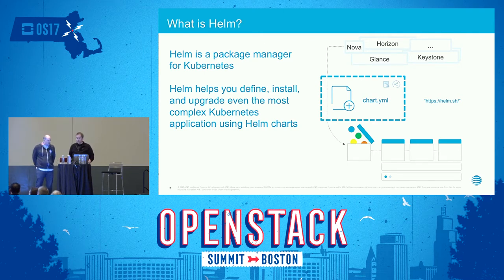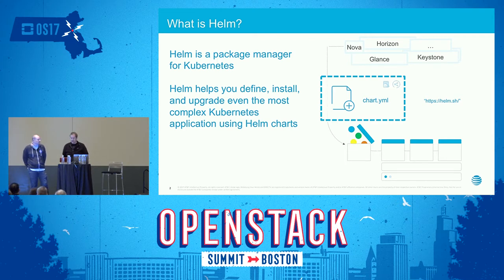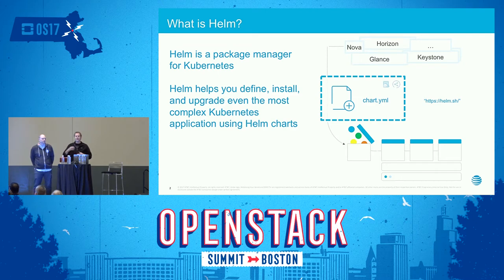A chart might also deploy something complex like a full stack with servers, databases, caches, and other things. Helm has an understanding of inter-chart dependencies. Importantly, it allows us to templatize our experience with Kubernetes, introducing operator-specific or environment-specific overrides. It also wraps all installations into independent releases that can be managed, deleted, upgraded, or installed as one unit.